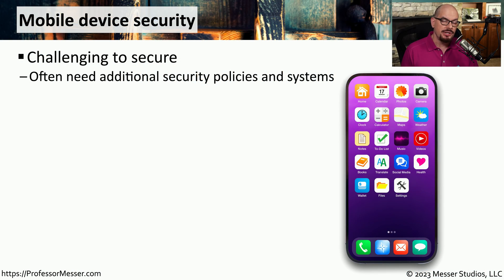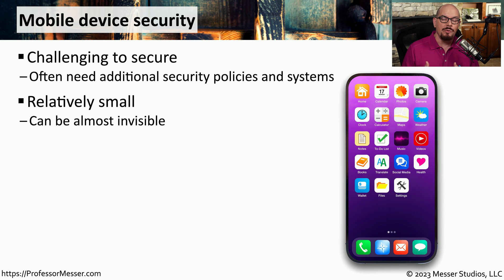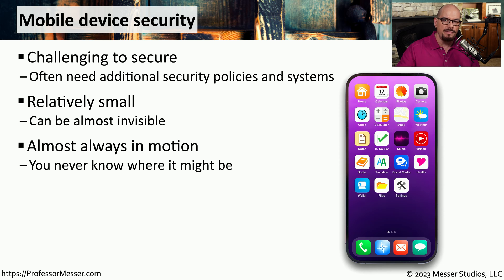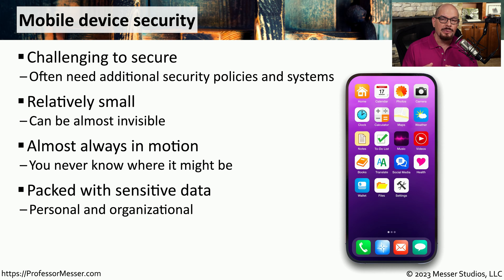To say that our mobile devices are challenging to secure is probably an understatement. These are devices that often require additional policies and procedures along with different technologies just to be able to provide security. These are relatively small devices and you can hide them almost anywhere on a person. You also find that these are always moving — it can be difficult to manage something when you're not quite sure where it happens to be at any point in time. And these small, invisible, constantly moving devices have sensitive information on them.